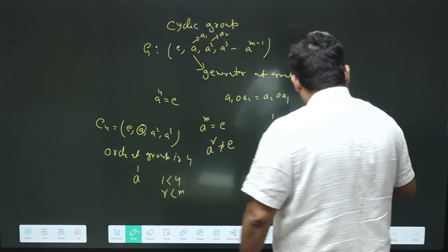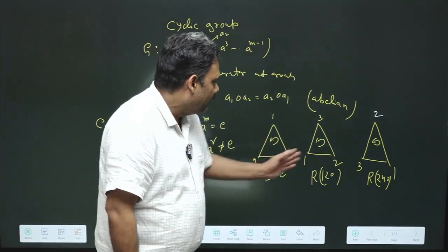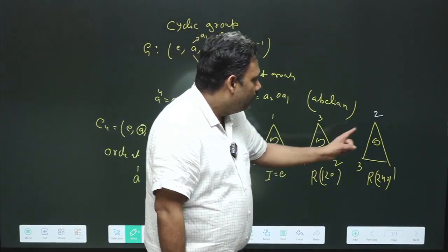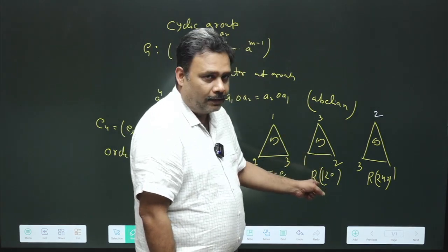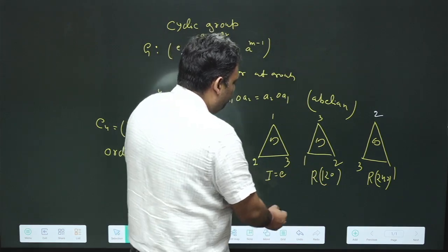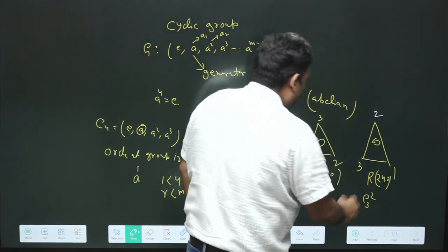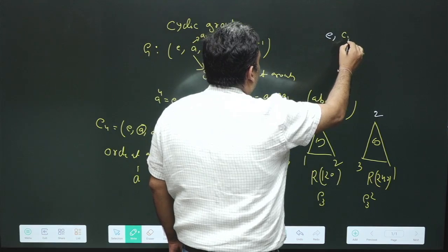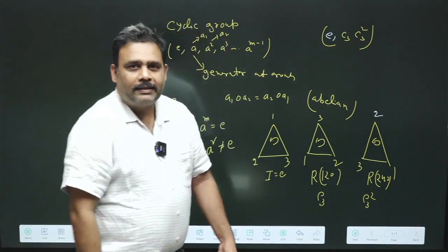If we have this particular operation, then obviously we know that these form a group. We can easily get this one by rotation two times of this particular element. If you remember, this will be C3 and this will be C3 square. So yes, this is E, C3, and C3 square identified as a cyclic group.